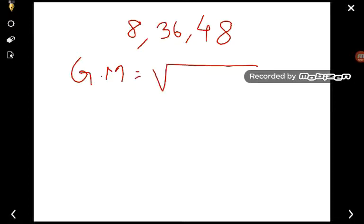So we are asked to find out the given data. These are the three given data. So how are we going to find out? We know that geometric mean is equals to N root of the variables.